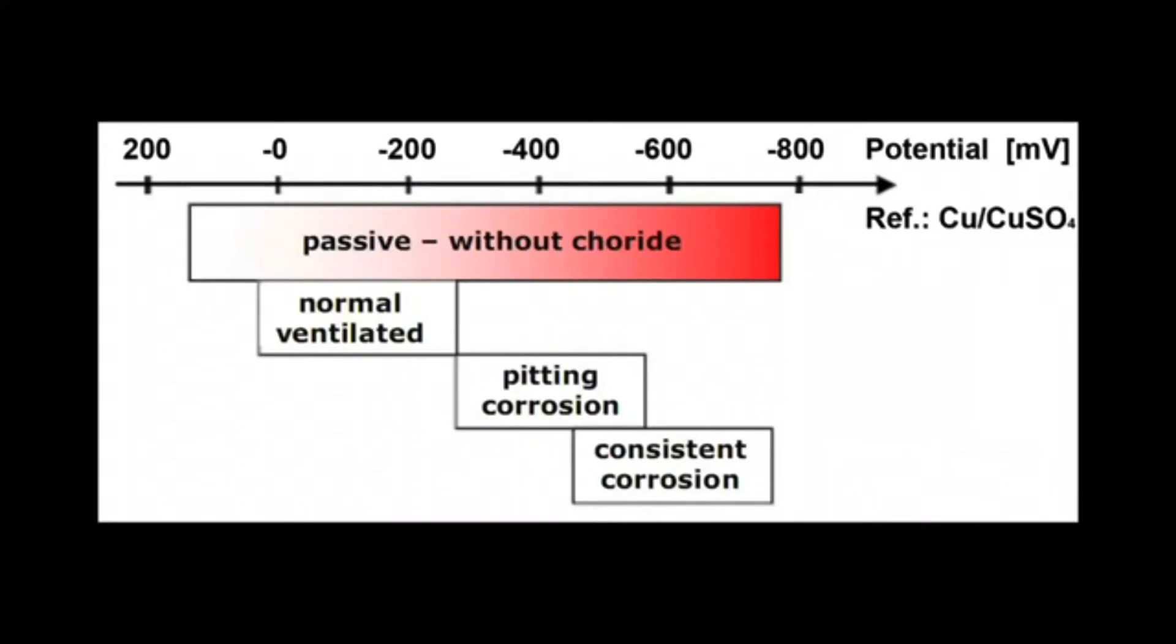Typical orders of magnitude for these half-cell potentials may give a quick indication of the corrosion status. However, for a more detailed interpretation, other factors have to be taken into consideration.